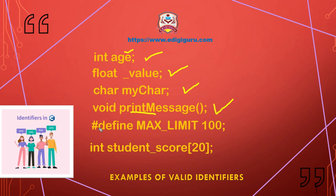'MAX_LIMIT' defined with '#define' is a valid identifier — it includes letters and underscores, which are allowed. 'student_score' is a name given to an array; it includes letters and underscores, which are allowed, so it is also a valid identifier.